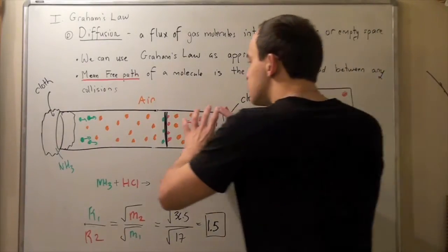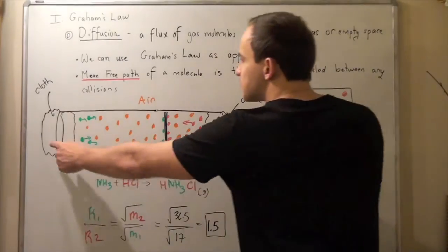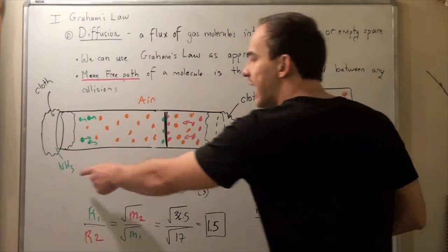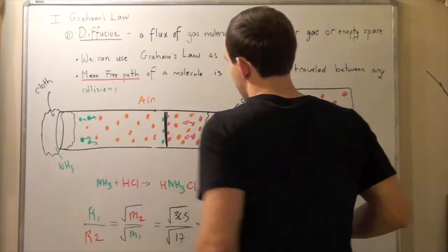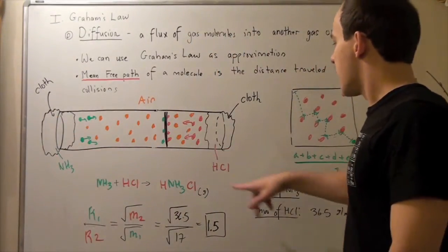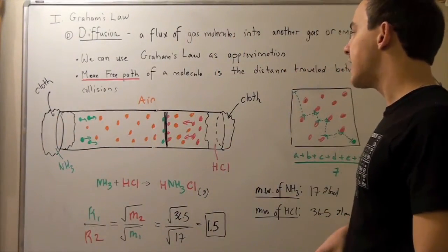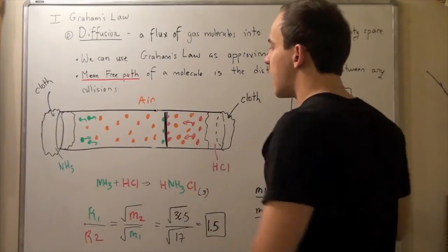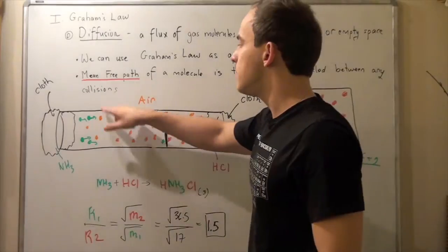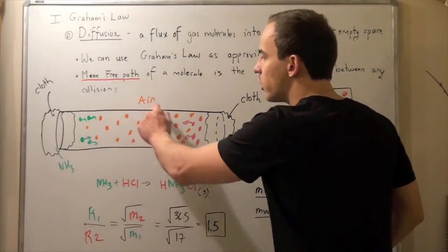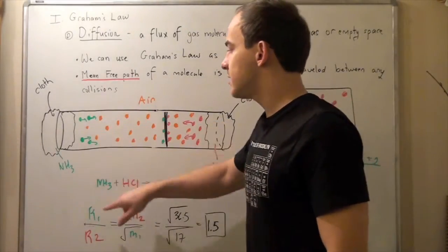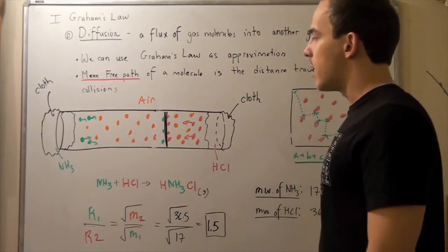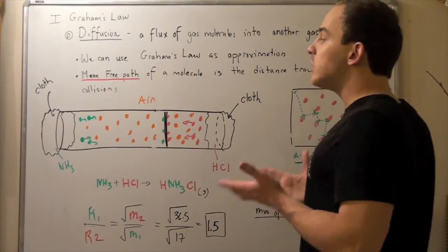Suppose I have a cylindrical tube and I have two cloths. Suppose I take this cloth, I soak it into ammonia NH3 and plug it up. Suppose I take this cloth, I soak it up in hydrochloric acid and then plug it up as well. So it's plugged up on both sides and I have air molecules in the middle. So orange guys are air molecules. Green guys are ammonia molecules. And red guys are hydrochloric molecules. So what will happen?